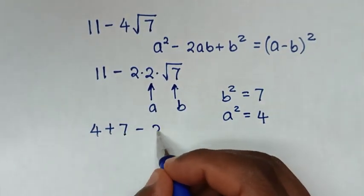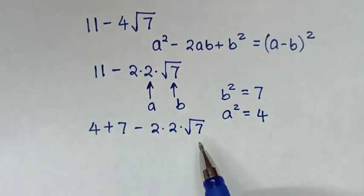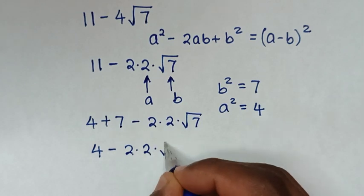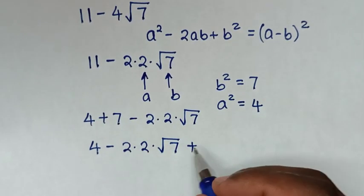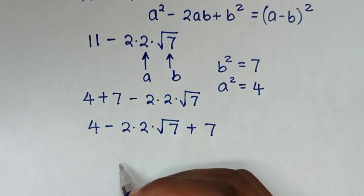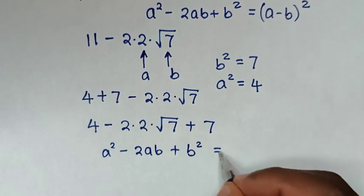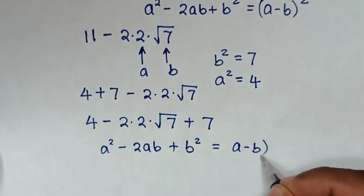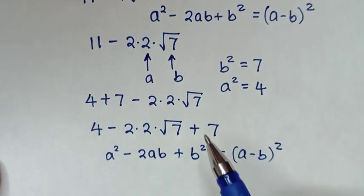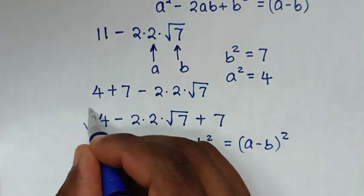Then this gives us minus 2 times 2 times square root of 7. For this to be in the required form, it will be 4 minus 2 times 2 times square root of 7 plus 7. Now this is in the form of a squared minus 2ab plus b squared, which equals a minus b bracket squared. Recall that this expression was under the square root, so we will apply the square root to it.